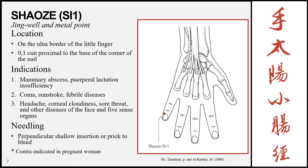The first point is Xiaozi, Small Intestine 1, the Jing-well and metal point of the meridian. It is located on the ulnar border of the little finger, 0.1 cun proximal to the base corner of the nail — on the opposite side of the finger from Heart 9. Indications include mammary abscesses, puerperal lactation insufficiency, coma, sunstroke, febrile diseases, headache, corneal cloudiness, sore throat, and other diseases of the face and five-sense organs. Insertion is perpendicular shallow, or prick to cause bleeding. Caution: contraindicated in pregnant women.